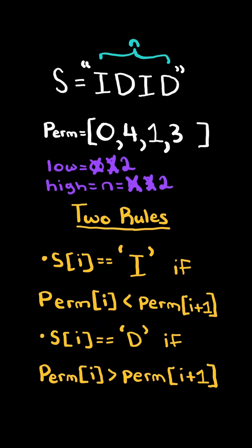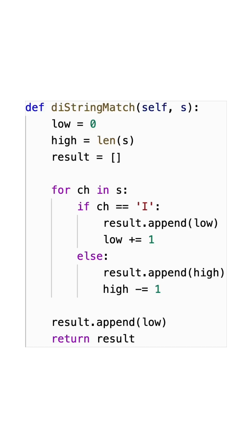After iterating through the string s, at the end only one number remains. So we add it to the array. And here's the code to do so.